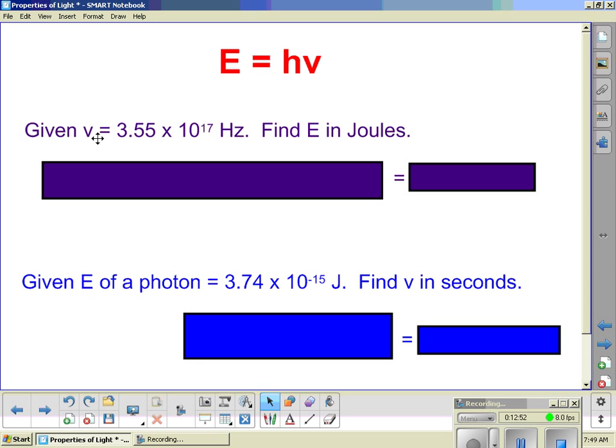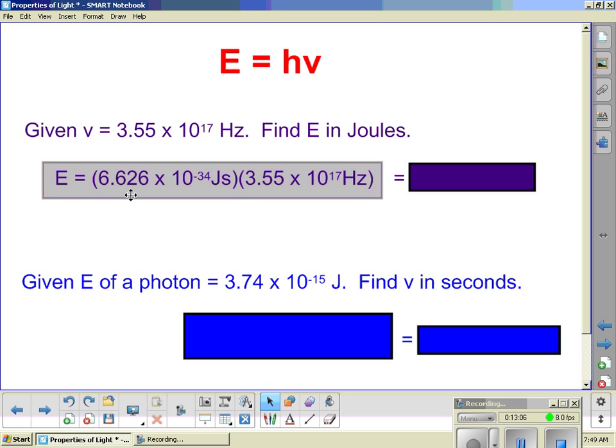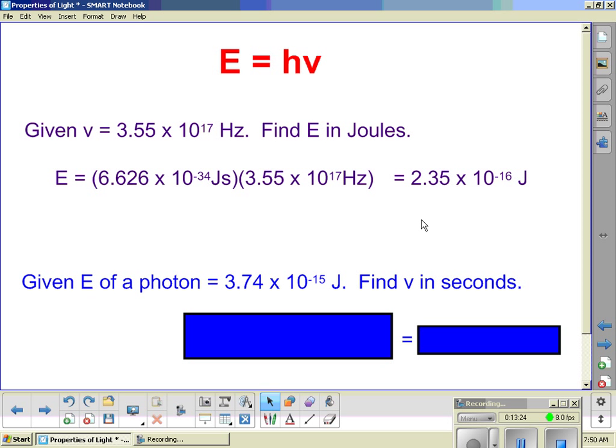So here we have this equation. Again, we're going to do a little bit of calculating with it. So given a frequency of 3.55 times 10 to the 17th hertz, we're going to find the energy in joules. Well, this should be simple multiplication, because if we're given frequency, and we know Planck's constant, we simply multiply those together. So we have Planck's constant, 6.626 times 10 to the negative 34 joule seconds, times the frequency we're given, 3.55 times 10 to the 17th hertz. Multiply them, and we get 2.35 times 10 to the negative 16th joules.